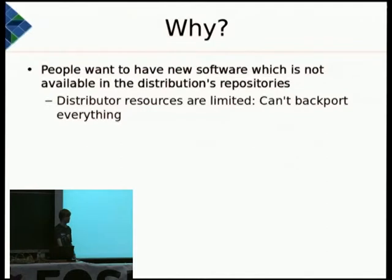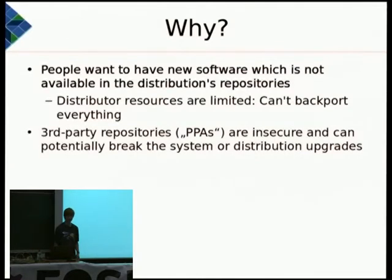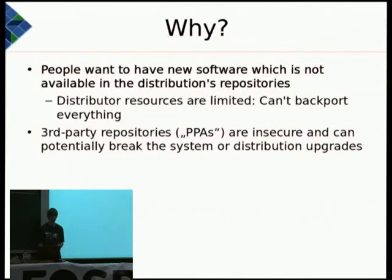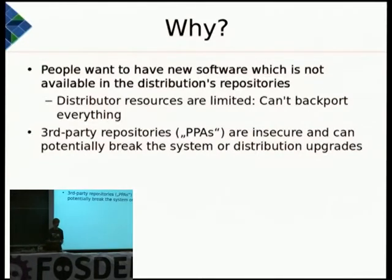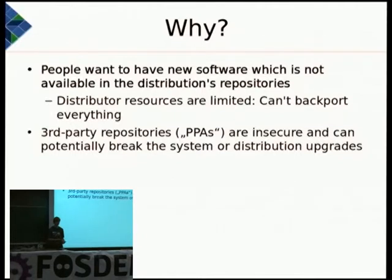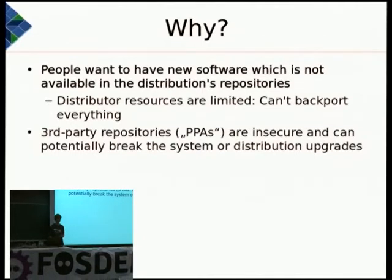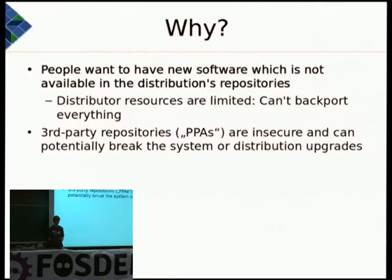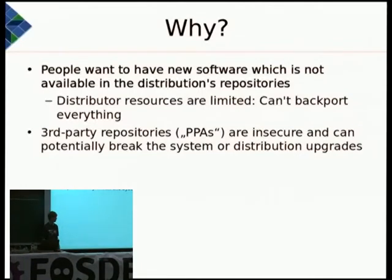Many people want a stable operating system which does not exchange the kernel or other components while running. There could be backports, but distributor resources are usually limited and fewer people are interested in backporting to stable distributions. Third-party repositories, called PPAs in the Ubuntu world, are insecure and can potentially break your system — for example if a PPA packager introduces packages that conflict during an upgrade, leaving you with a broken system.